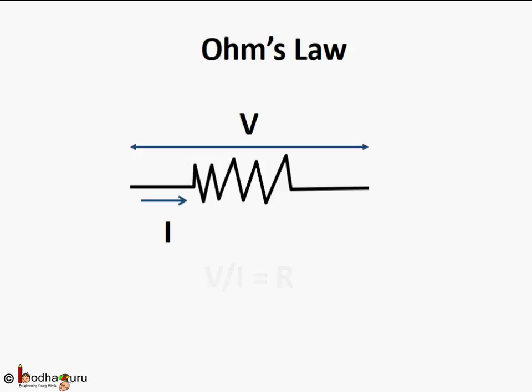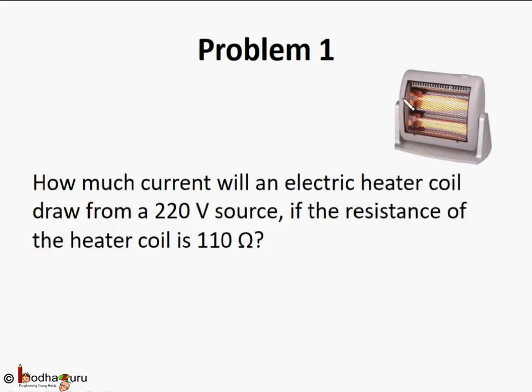According to Ohm's law, the potential difference between two points of a conductor is directly proportional to the current flowing through it, provided temperature remains constant. So V/I equals a constant. This constant is called resistance R. It represents the property of the conductor to resist the flow of charges. So V/I = R, or V = I × R. Let's take some examples.